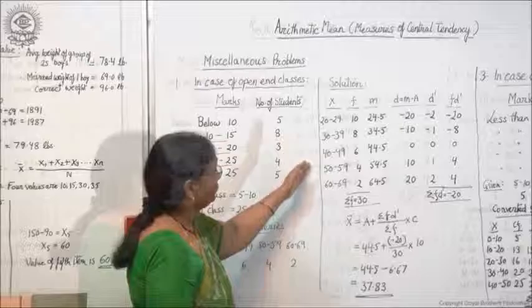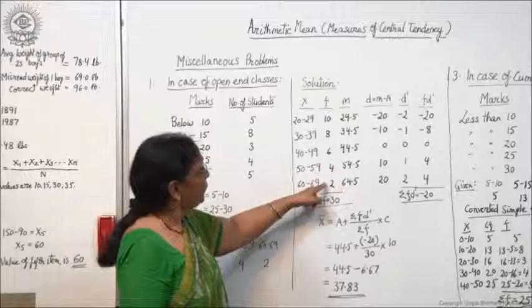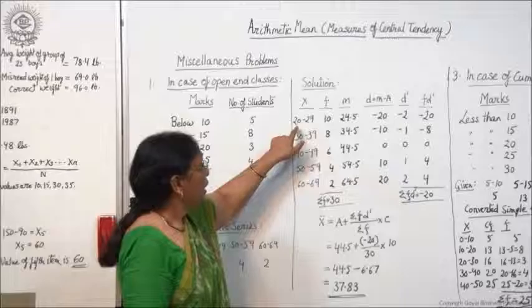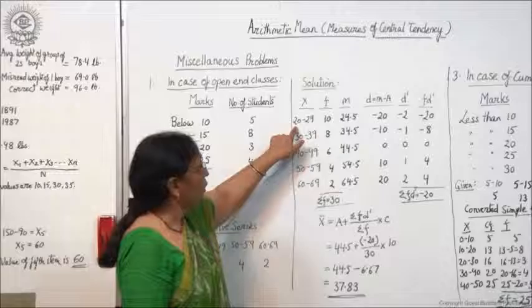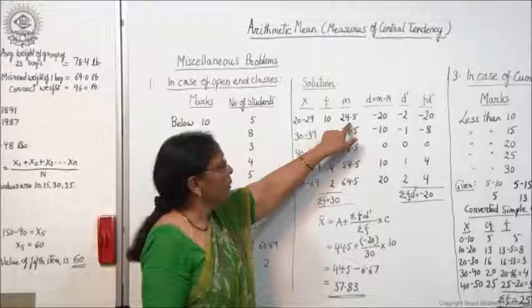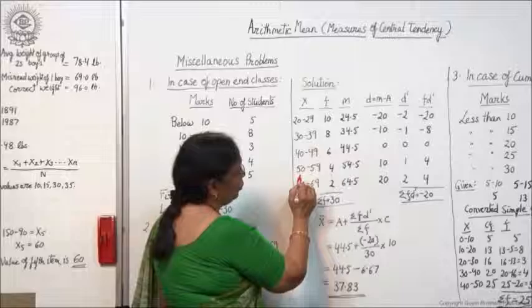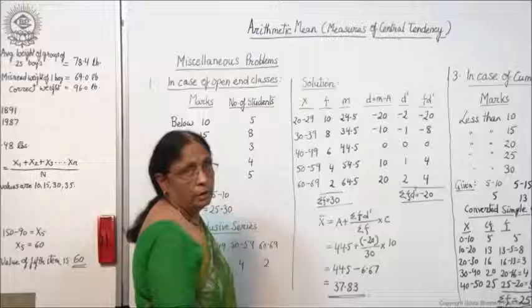How to do the calculation in this case? You will copy down the series in the same order and frequency in the same order. Now the next step is you will take the midpoint. This is 20 to 29 — what will be the midpoint here? As I told you previously, it is L1 plus L2 upon 2. So this is L1 lower limit, this is L2 upper limit, this plus this upon 2 — this will be 24.5. Then the class interval 30 to 39 has midpoint 34.5, then 44.5, 54.5, and 64.5.